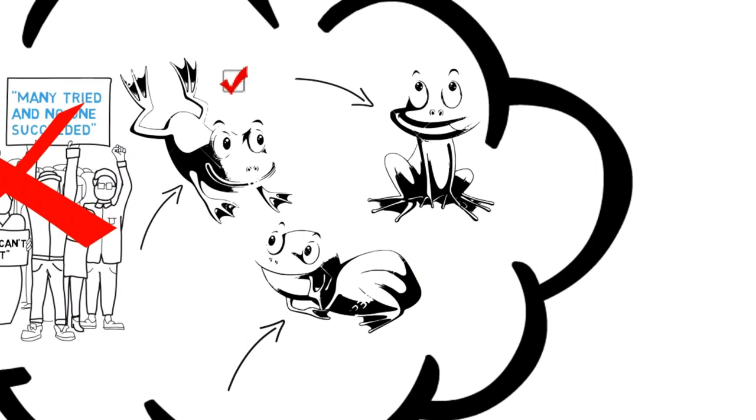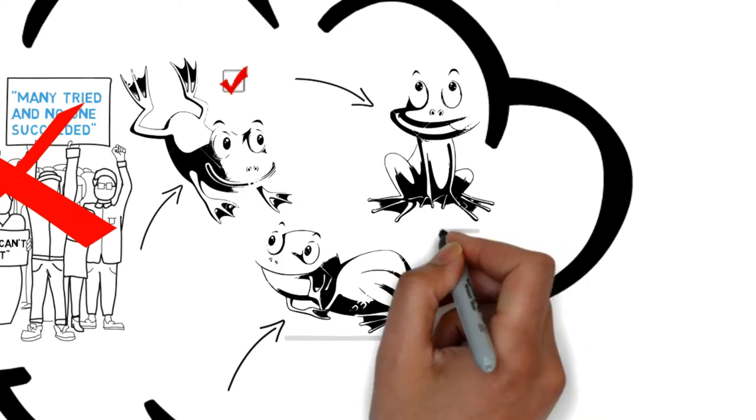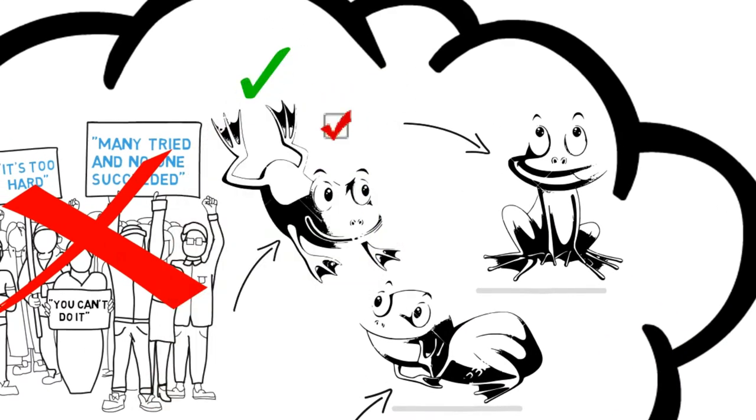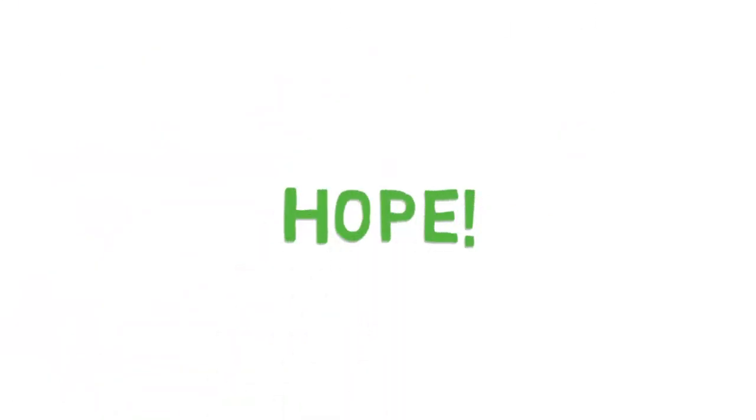While the first two frogs, having heard the oppressive voices, obeyed them and gave up, the last frog simply did not hear them. That's why he did not lose hope. And this is what our video is about today. Hope.